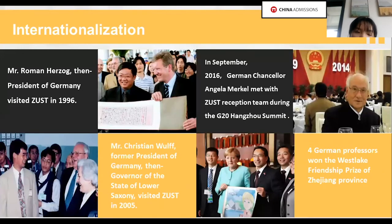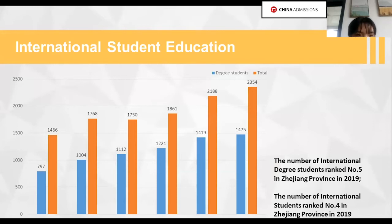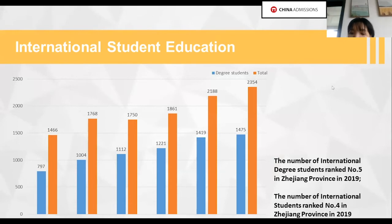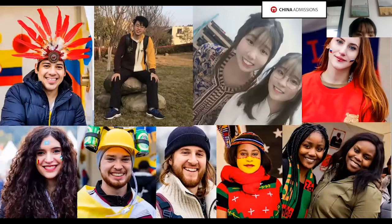Here are some pictures of German leaders visiting our university. In terms of international student education, in 2019, the number of international degree students ranked number five in Zhejiang Province with 1,475, and as total number of international students we rank number four with 2,354. Our international students come from over 100 countries.